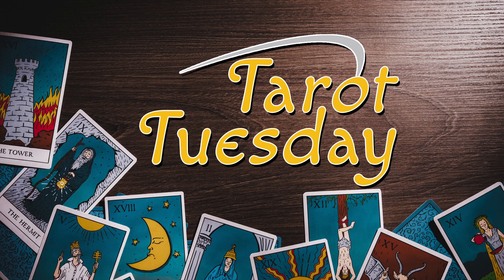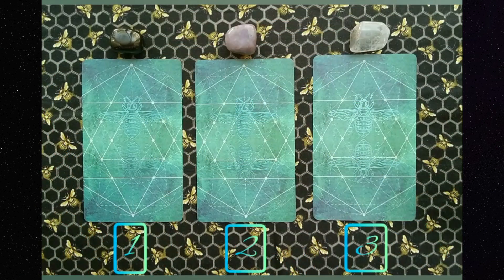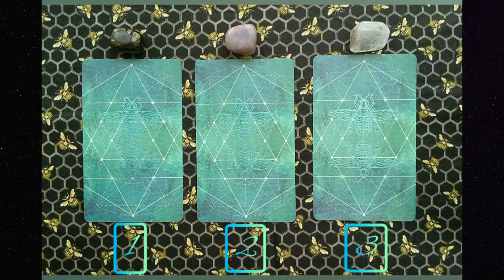Hi there, this is Debra from Golden Bee Tarot and Reiki. Welcome to the July 5th edition of Tarot Tuesday. This month we are working with the Journey of the Sacred Bee Tarot by Kelly Burton.